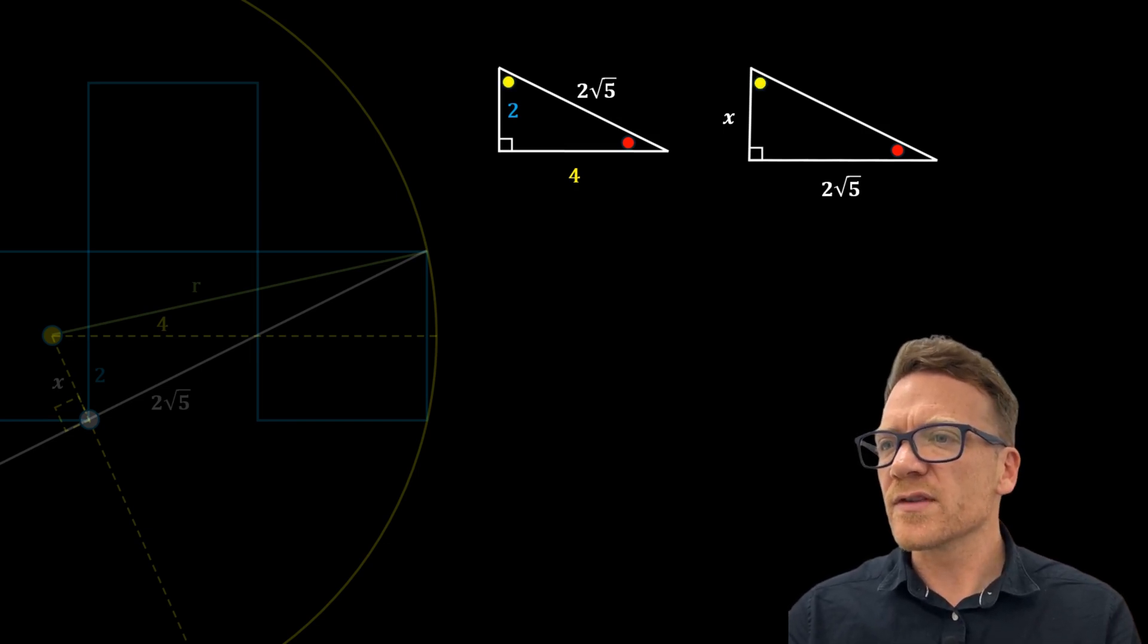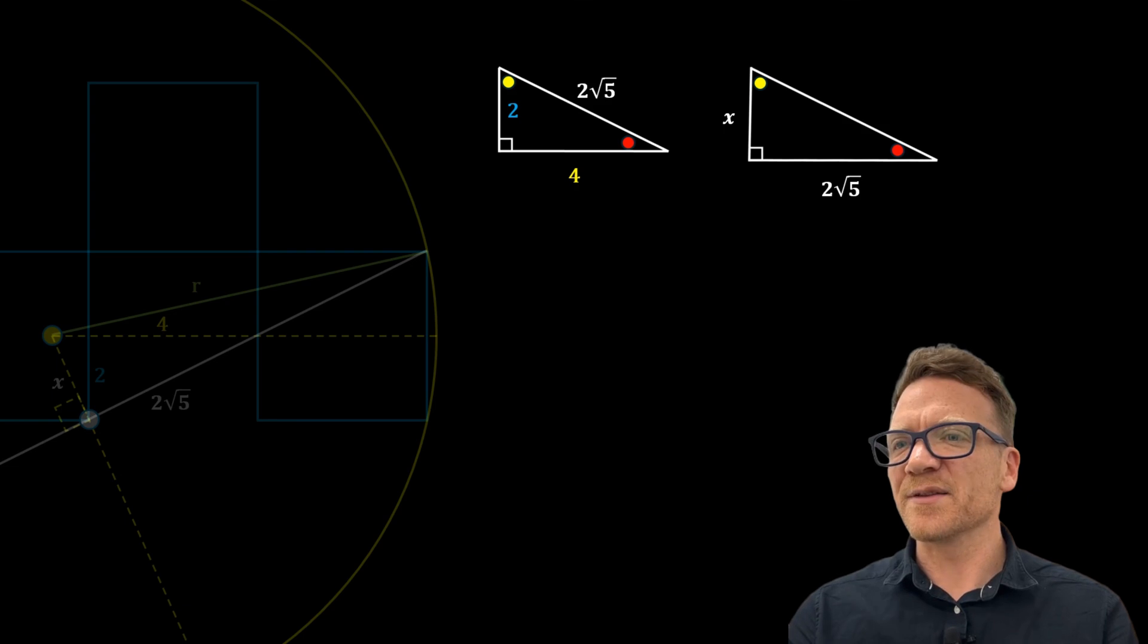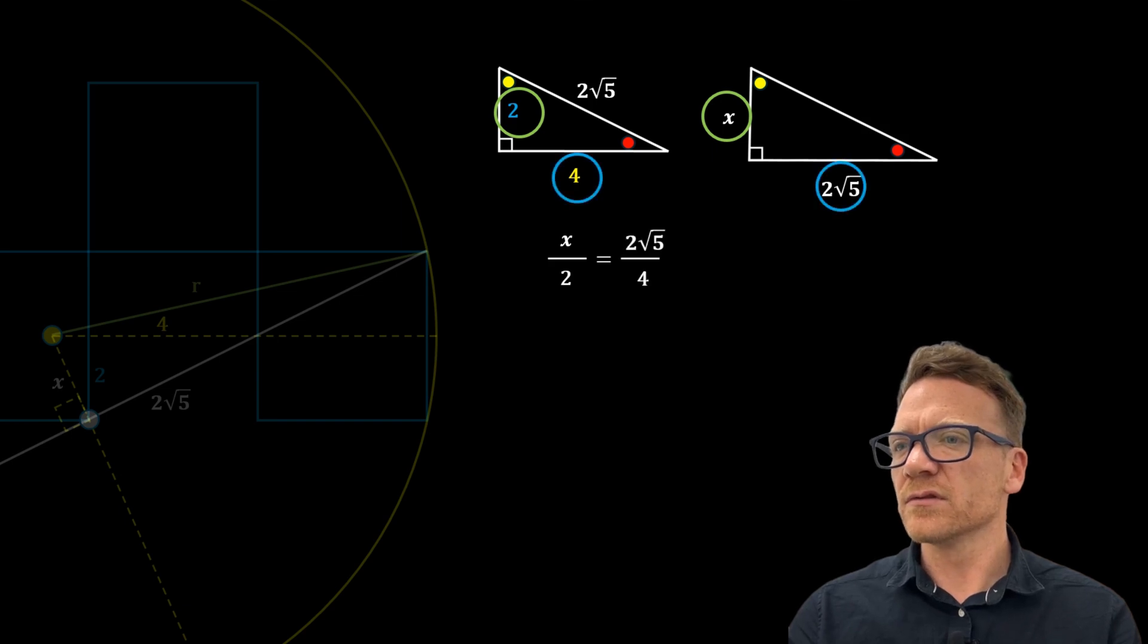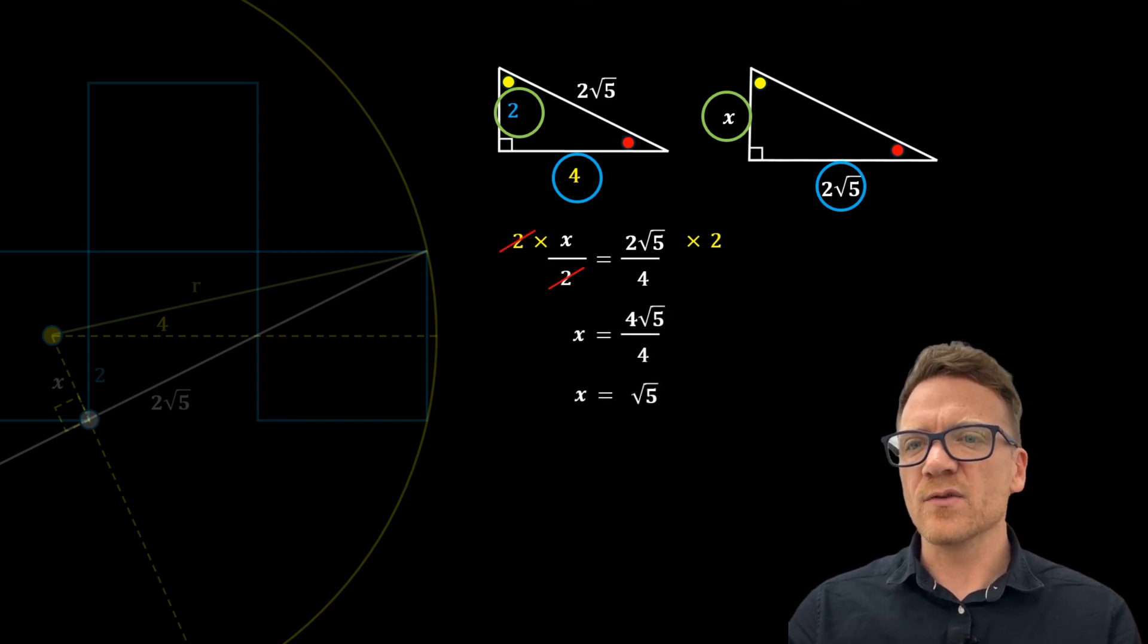Now because these triangles are similar, we can work out the length of x by setting up this ratio problem, where x over two is equal to two square root five over four. We multiply both sides by two, and we get x is equal to four square root five over four. Four divided by four is one, so x has a value of square root five.